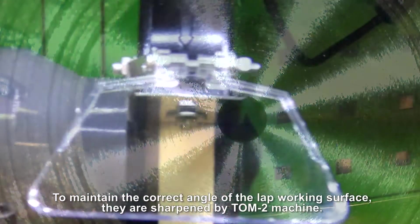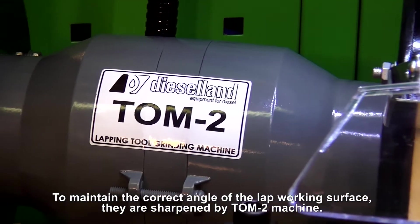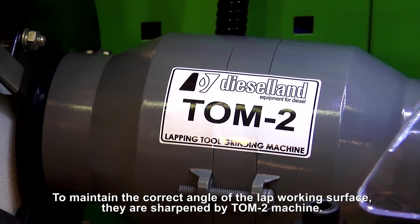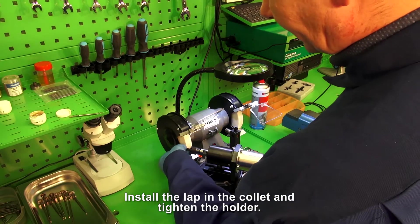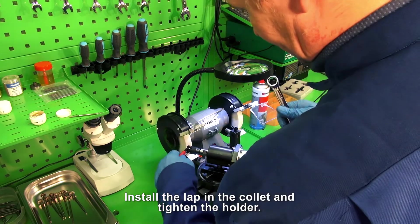To maintain the correct angle of the lap working surface, they are sharpened by the TOM2 machine. Install the lap in the collet and tighten the holder.